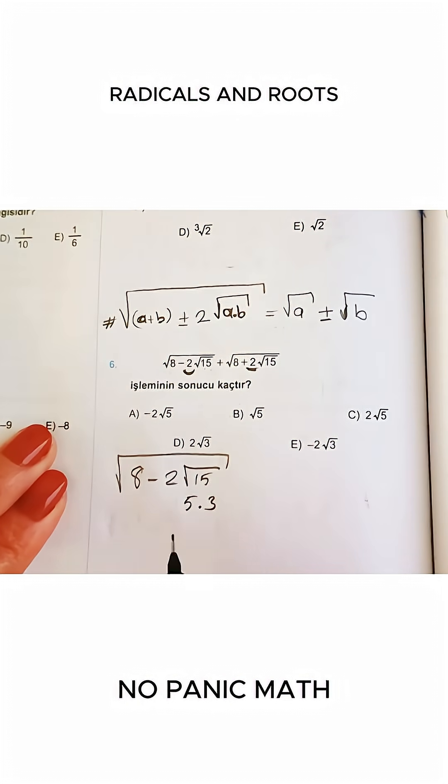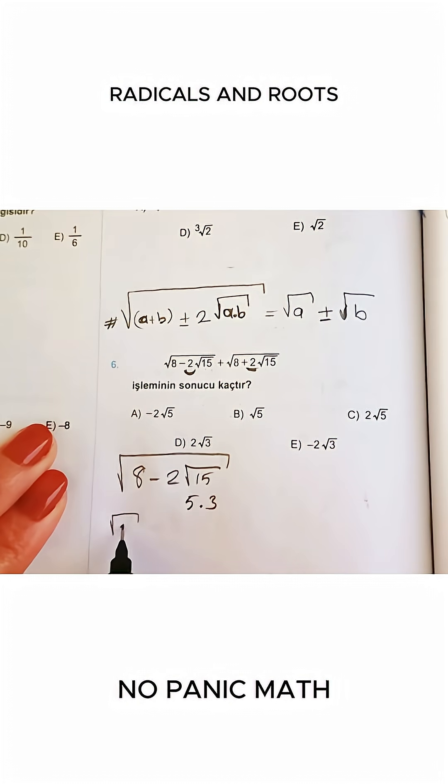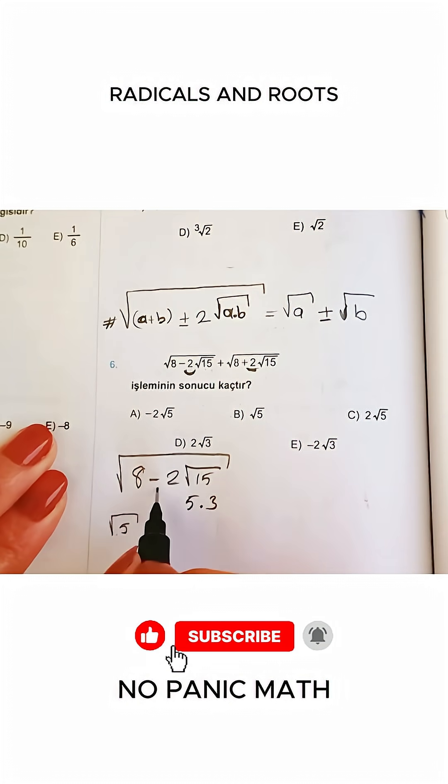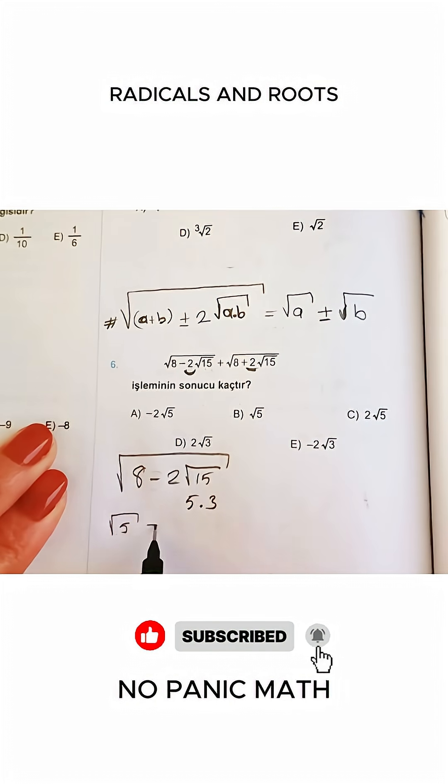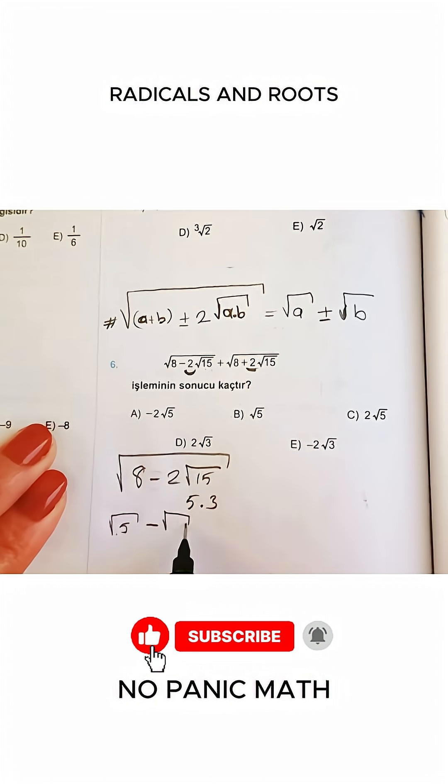Now here's what we're going to do. We've factored it, right? Starting from the largest number, you write them inside the root. Root 5. Here our operation is subtraction. I wrote square root of 3.